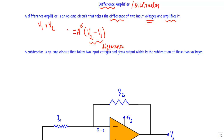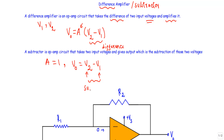Therefore, the output voltage of the difference amplifier takes the difference of two input voltages and amplifies it by a factor of A. The value of A depends on the external parameters of the operational amplifier circuit. If we choose component values such that A equals 1, the output voltage V0 will be equal to V2 minus V1, giving us the difference of the two voltages.